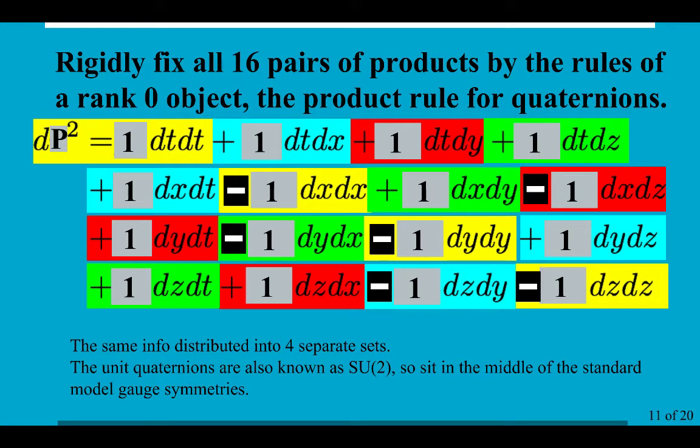So, what I propose to do is to rigidly fix all 16 pairs of products by the rules of a rank zero object, specifically the product rule of quaternions. Now, you may not have heard of quaternions. You may have only heard of vector calculus. But vector calculus is basically all the guts of quaternions put together in a particular way.